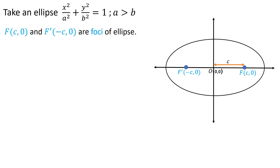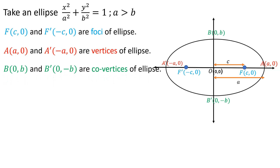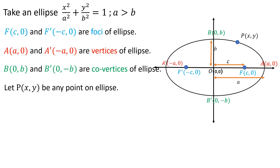A (a, 0) and A' (-a, 0) are vertices of the ellipse, therefore the distance between O and A is a. Likewise, B (0, b) and B' (0, -b) are co-vertices of the ellipse, therefore the distance between O and B is b.